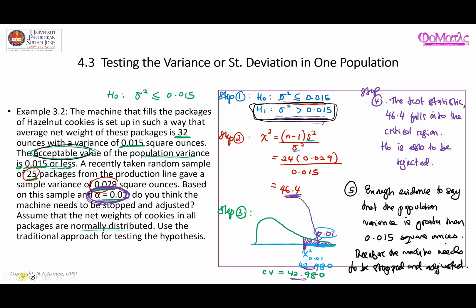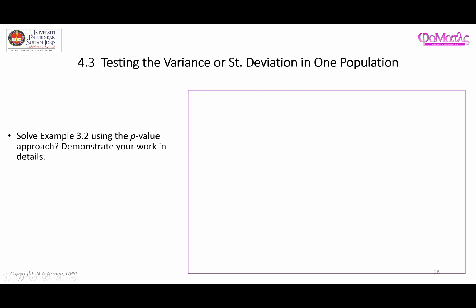Now let's solve the same example using the p-value approach. Step one is the same: H₀: σ² ≤ 0.015 and H₁: σ² > 0.015. Step two is to calculate the test statistic, which follows the same procedure, giving a test statistic of 46.4. Step three is to obtain the p-value.